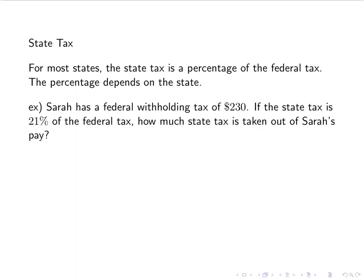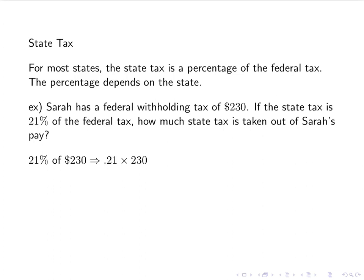For example, Sarah has a federal withholding tax of $230. If the state tax is 21% of the federal tax, how much state tax is taken out of Sarah's pay? This is a basic percent problem: 21% of the federal tax of $230, so .21 times $230 gives us $48.30. The biggest mistake here is taking a percentage of earnings rather than a percentage of the federal tax.